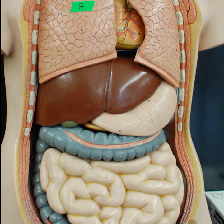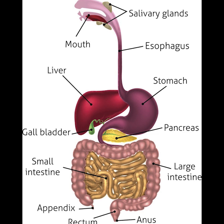The third stage begins in the duodenum with the intestinal phase, where partially digested food is mixed with a number of enzymes produced by the pancreas. Digestion is helped by the chewing of food carried out by the muscles of mastication, the tongue, and the teeth, and also by the contractions of peristalsis and segmentation.